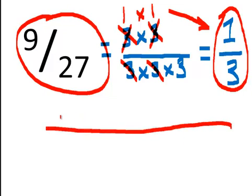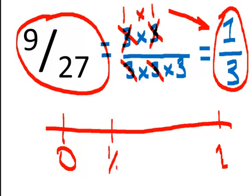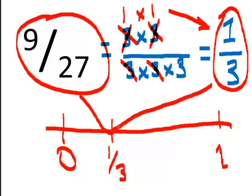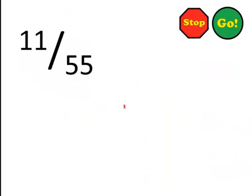If we had a number line here with a 0 and a 1, then 1 third would be about right here somewhere. So they would both live at the same place on the number line.